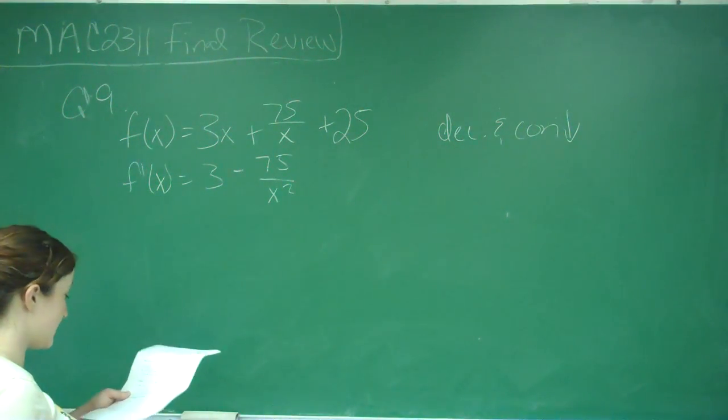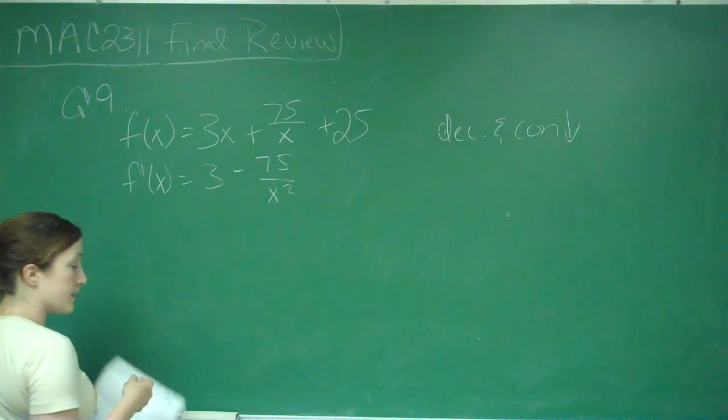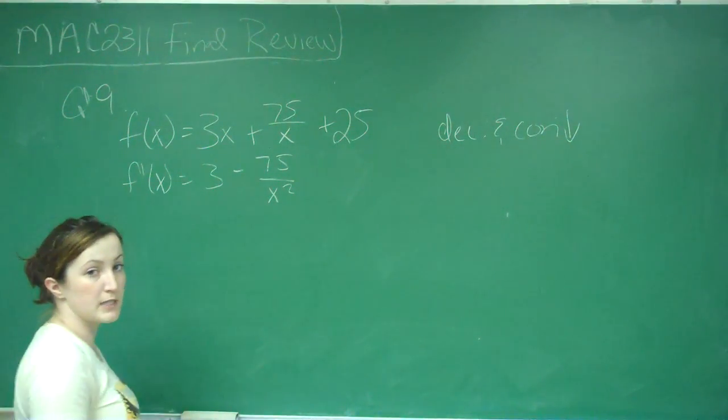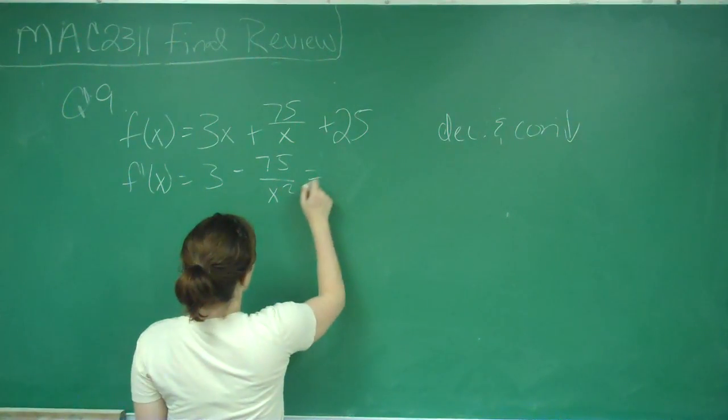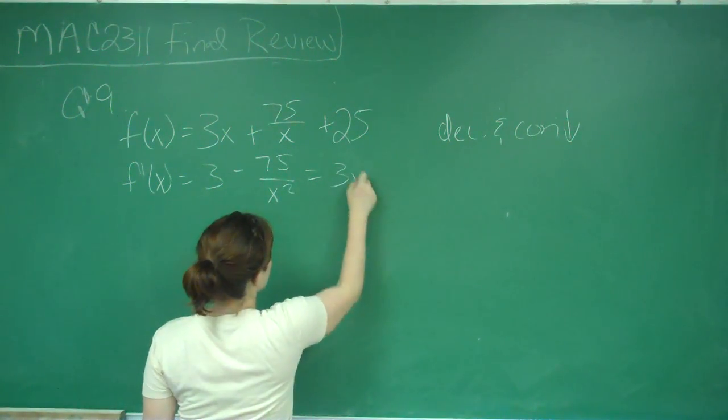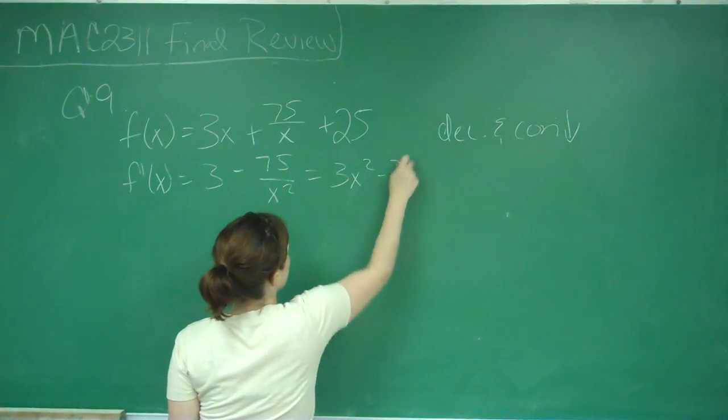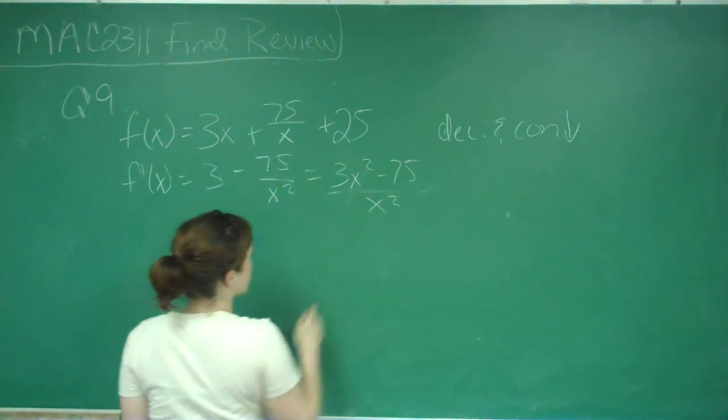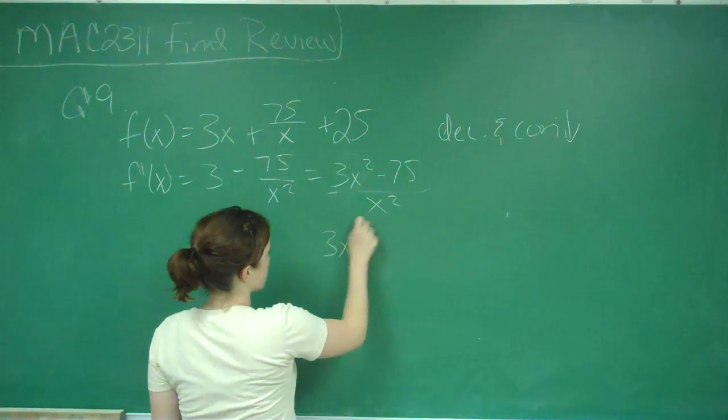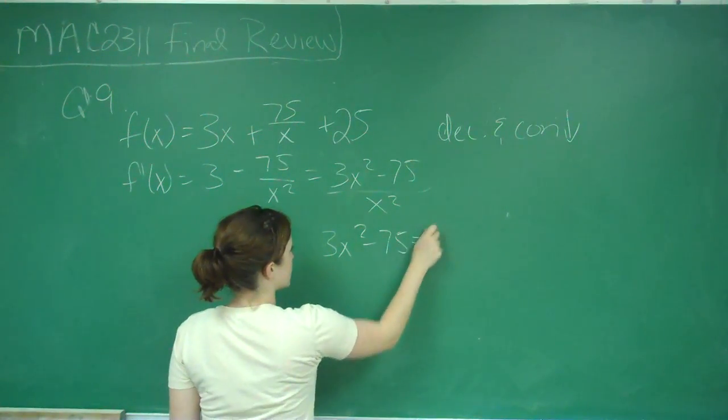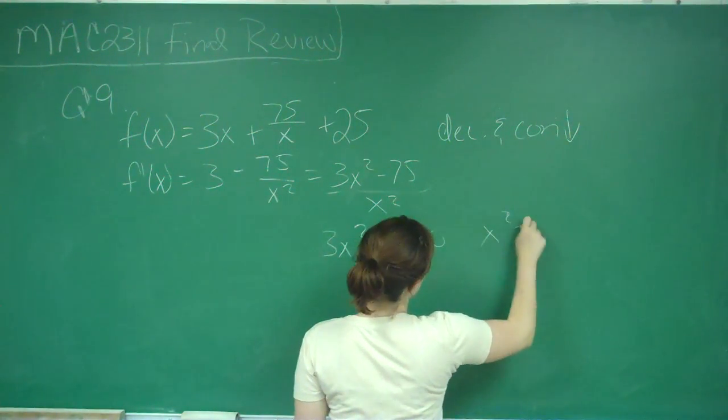And we're going to want to set this equal to 0 to know our critical points. We can test points on either side to know where it's decreasing. So I'm going to find a common denominator, and that will give me 3x squared minus 75 over x squared. So we set the top and the bottom equal to 0. So 3x squared minus 75 is equal to 0. x squared is equal to 0.